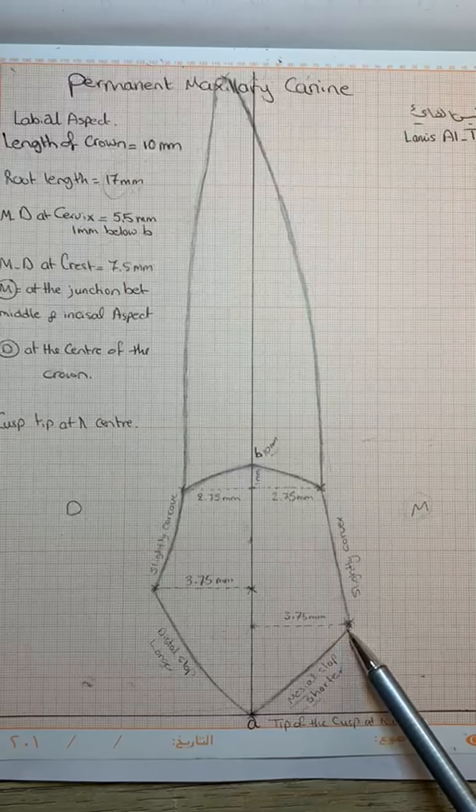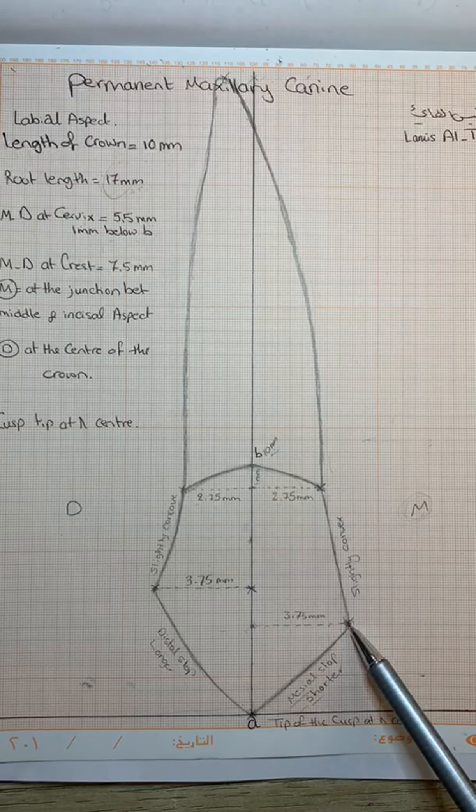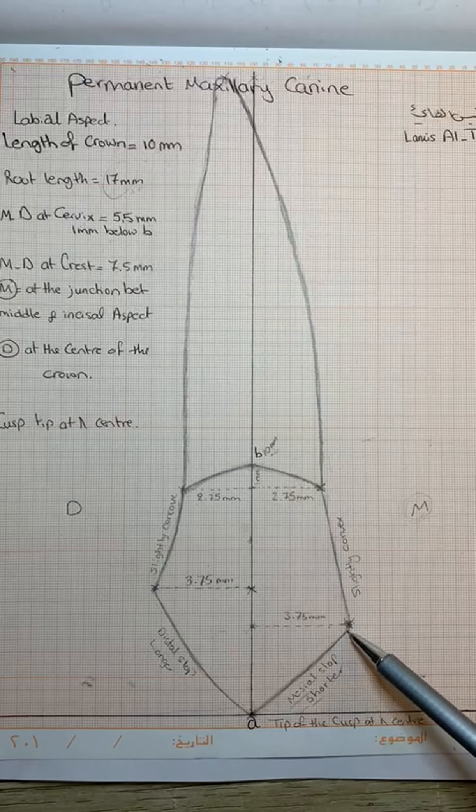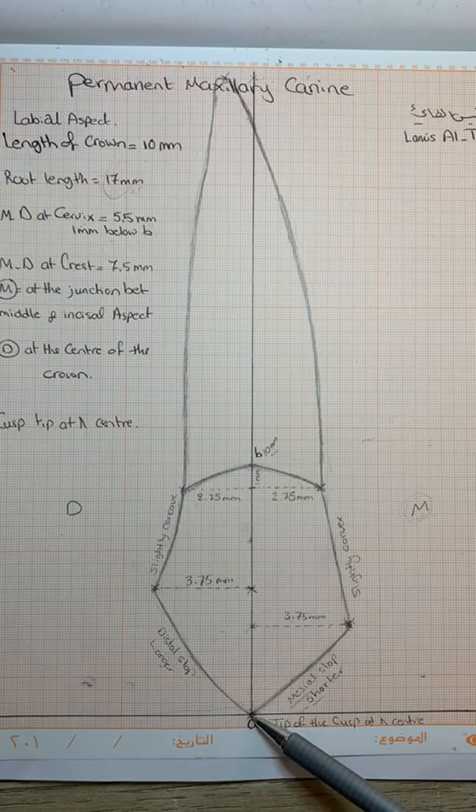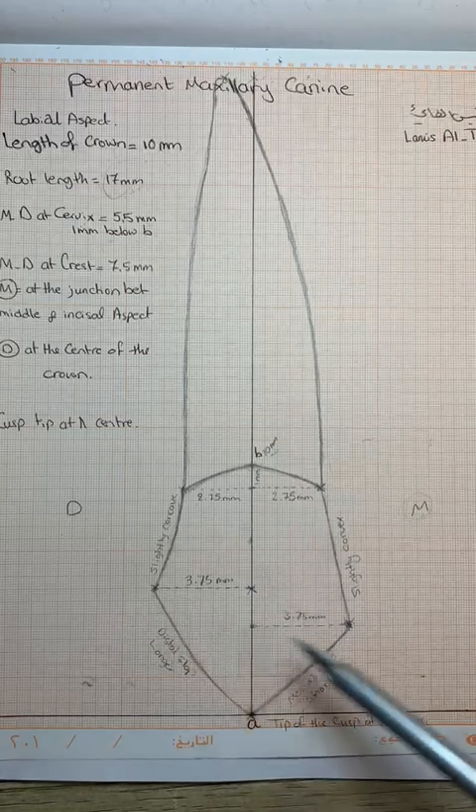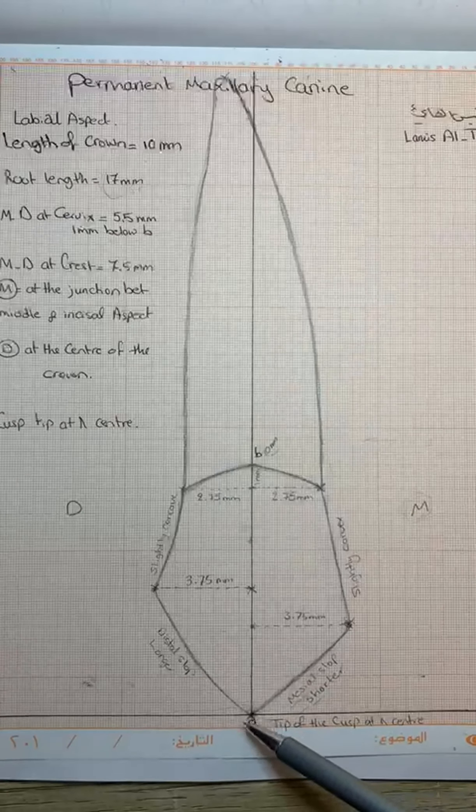The mesial slope will be slightly rounded, moving from the crest towards A. The same for the distal slope. Here will be the mesial slope, which must be shorter than the distal slope. This is the difference between the levels, which leads to the mesial slope being shorter than the distal slope.